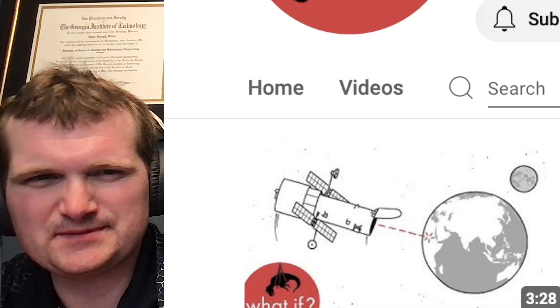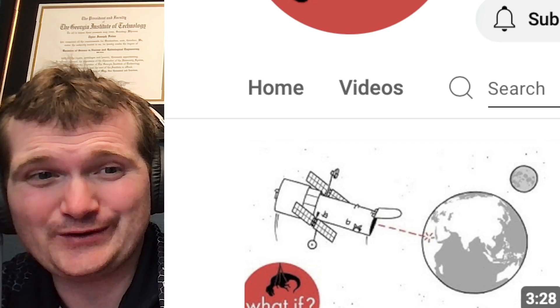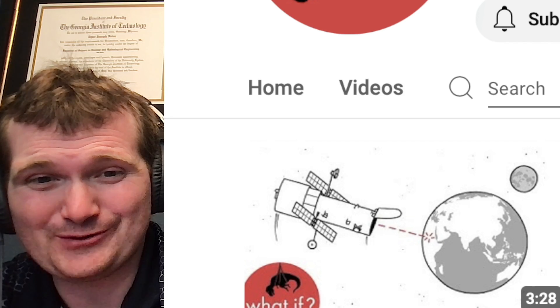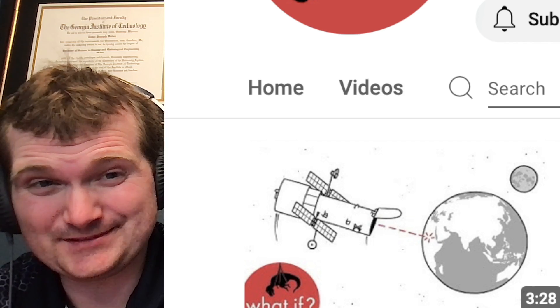It's time for some more XKCD. Specifically, what would happen if you aimed the Hubble Space Telescope at Earth? Well, it's never good to aim anything in the opposite direction.